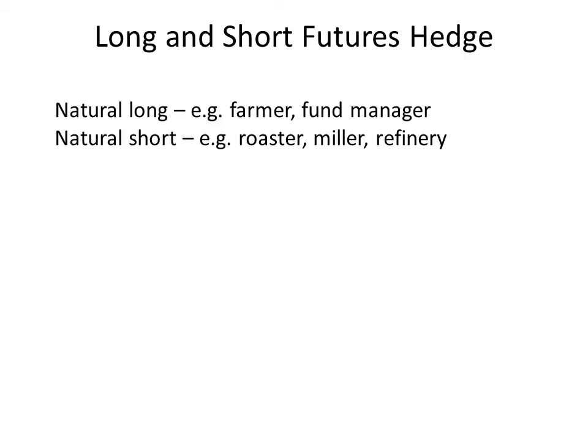A natural long is exemplified by a farmer who owns his crops — currently in the ground ready for harvest, or already harvested and in storage. The farmer owns the underlying asset, so he is long of the market. If market prices rise he benefits, but if prices fall he incurs a cost unless he can lock in a forward price using futures to manage this price risk.